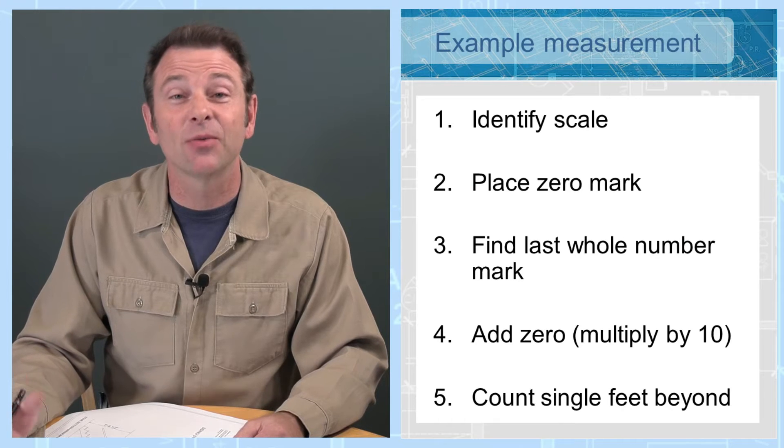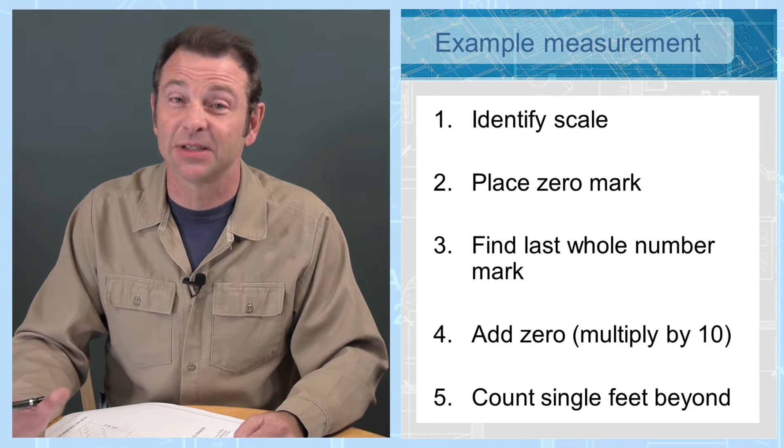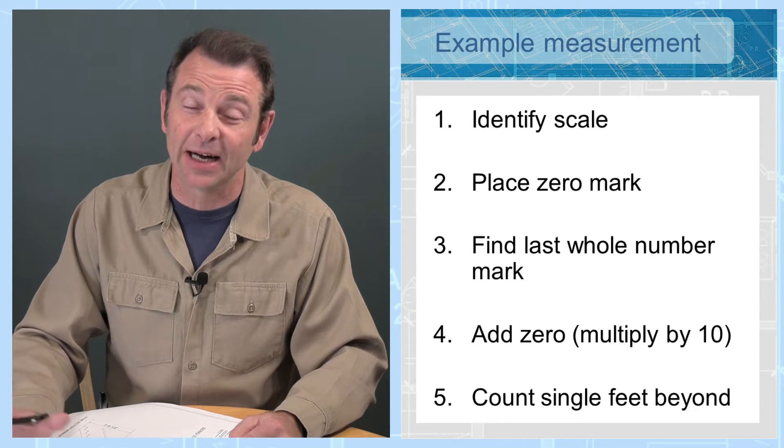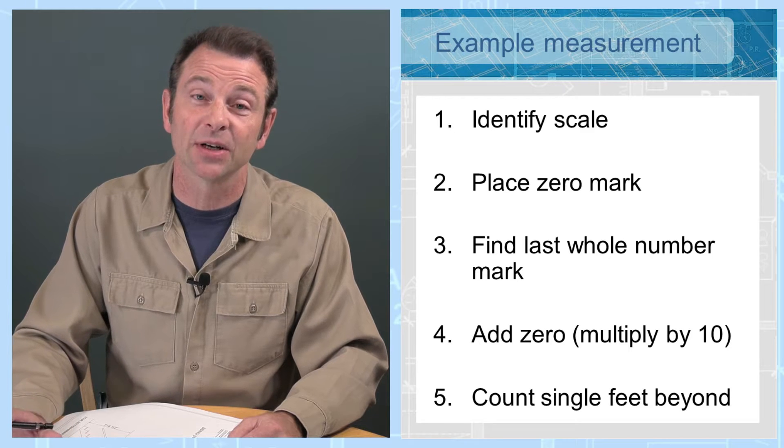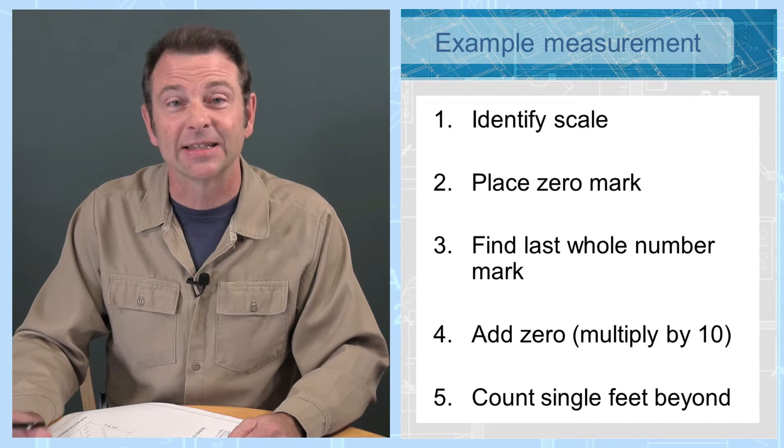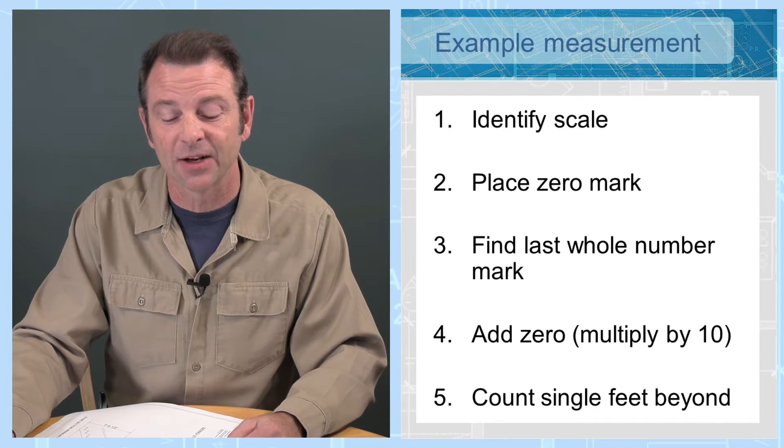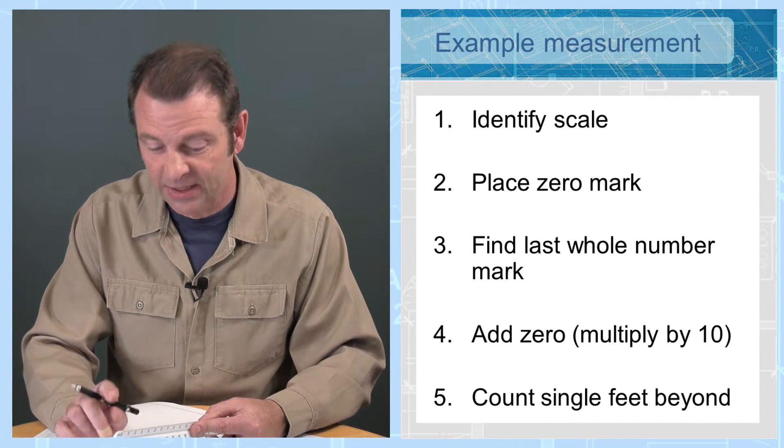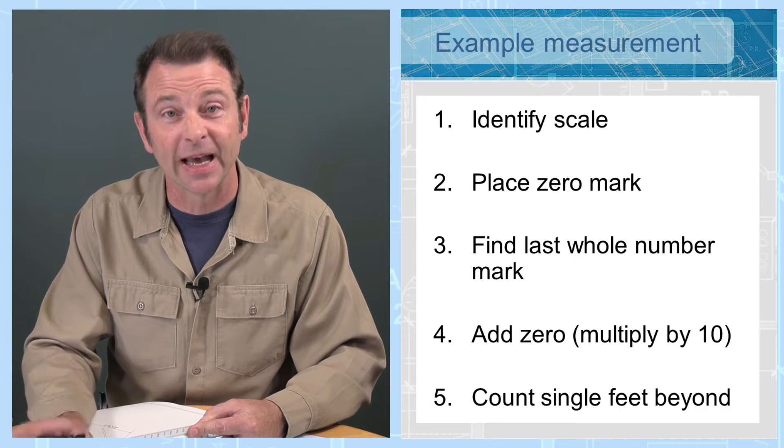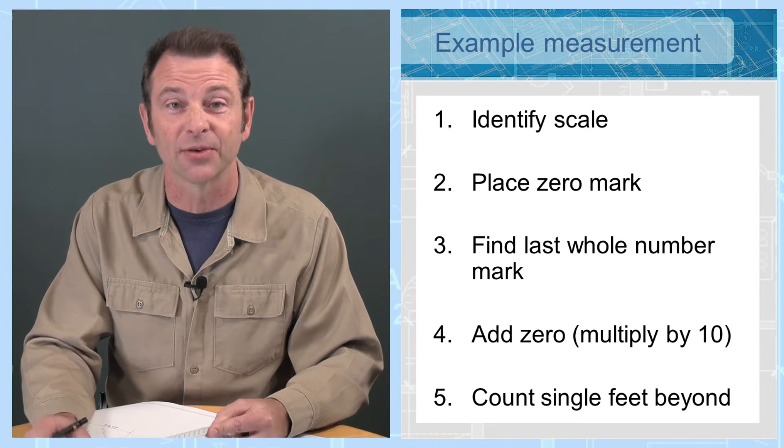When we're using an engineer scale, we need to follow a certain number of steps, just like our architect scale, but they're not the same steps. First is identifying your scale. Your plans should be marked with a specific scale. You need to match the specific ruler edge to that scale so that you're working accurately.